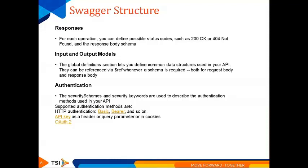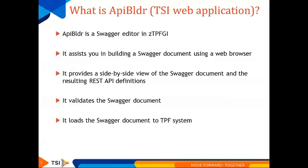For input and output models, parameters can be simple types like integer or string, or can be objects. We can also reference a schema to validate request and response parameters. For authentication, we support HTTP basic authentication, API keys passed as a token in the header, query parameter, or cookies, and OAuth2 where we can define the scope such as read and write. This is the background of a Swagger document.